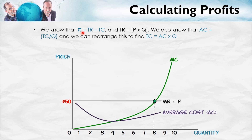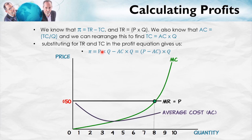Remember that profit equals total revenue minus total cost, and total revenue is price times quantity, P times Q. We also know that average cost equals total cost divided by quantity. Rearranging, total cost equals average cost times quantity. Making these substitutions into our profit equation, profit equals price times quantity minus average cost times quantity. Taking Q out of both parts, profit can be written as price minus average cost, all times quantity.